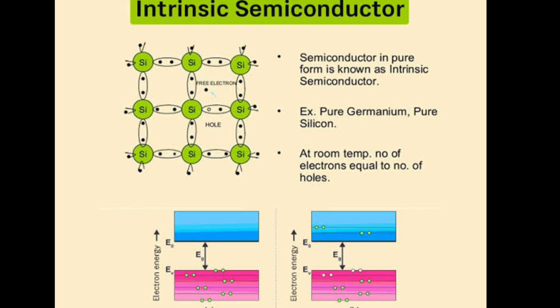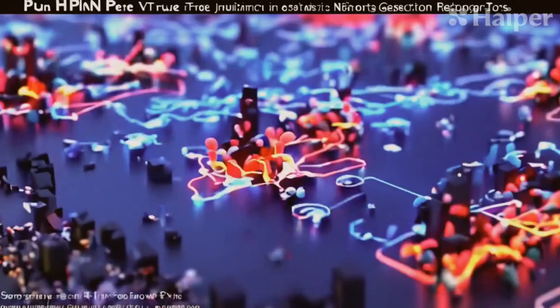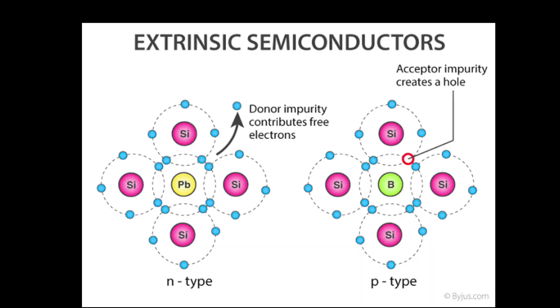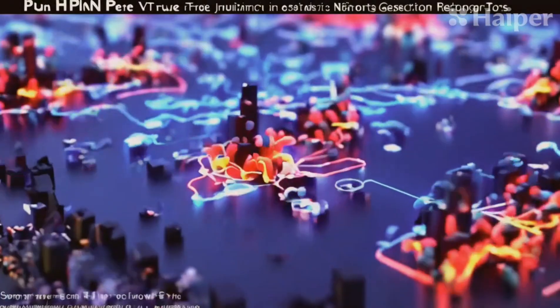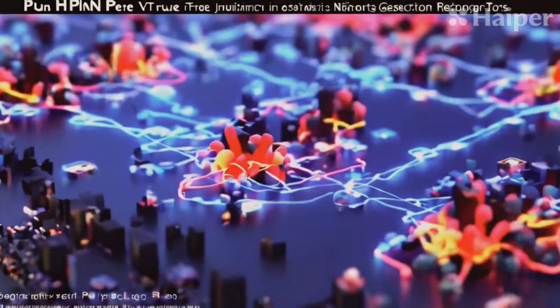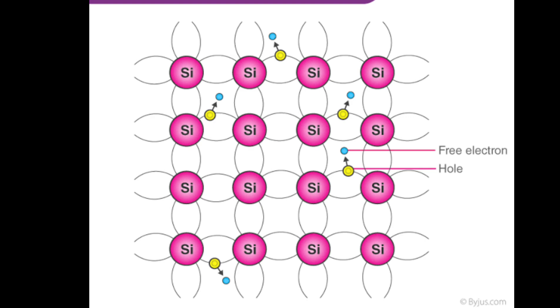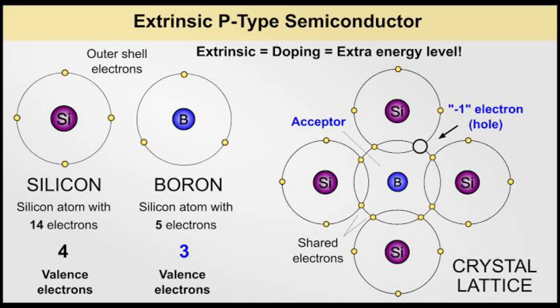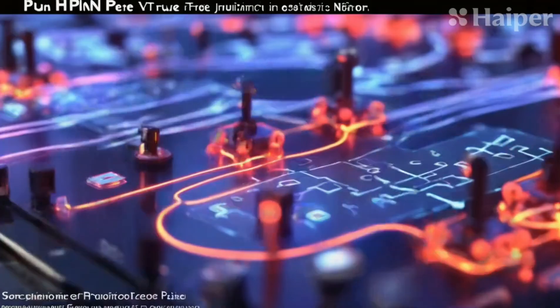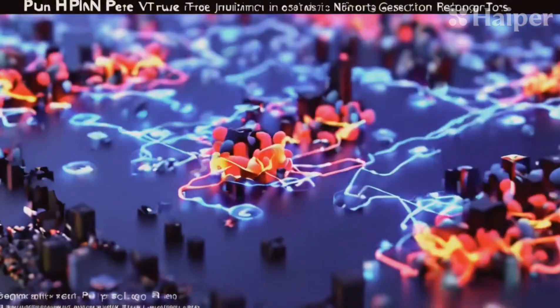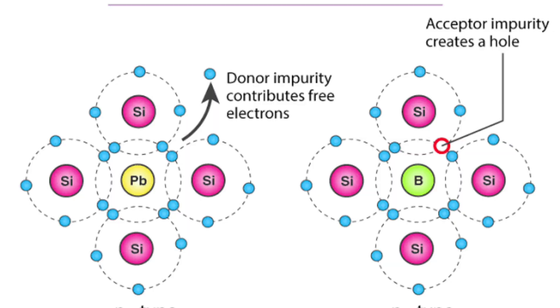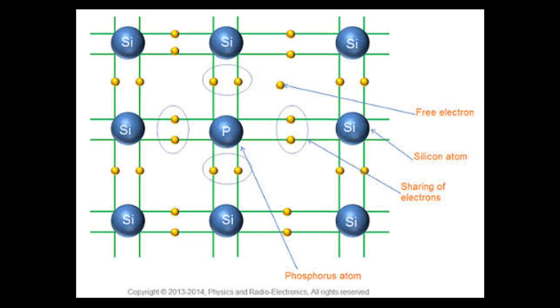Extrinsic semiconductors are two types: P-type and N-type semiconductors that are created by introducing impurities into a silicon crystal. P-type semiconductors are positive-type semiconductors, meaning they have a deficiency of electrons and more holes as charge carriers. N-type semiconductors are negative-type semiconductors, meaning they have an excess of electrons and deficiency of holes.